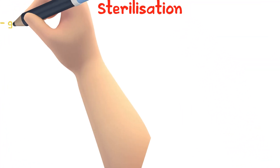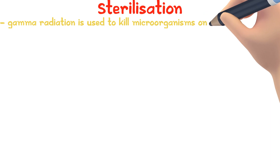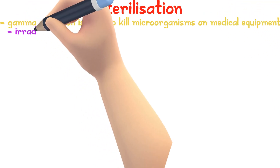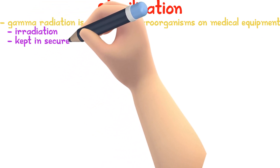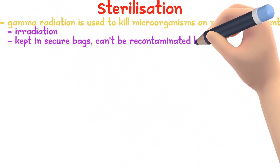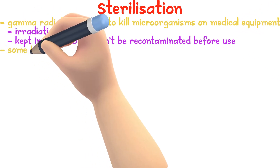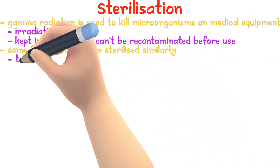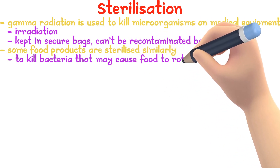Gamma radiation is used to kill microorganisms on medical equipment — we call this irradiation. Items that have to be sterilized are kept in secure bags so that they cannot be recontaminated before use. Some food products are also sterilized similarly to kill bacteria that may cause the food to rot.